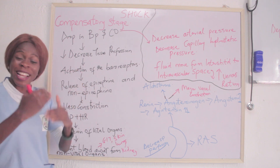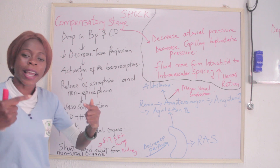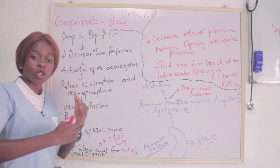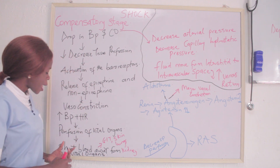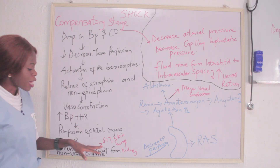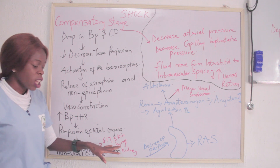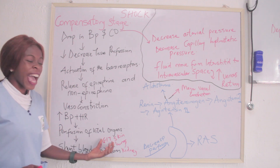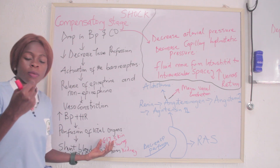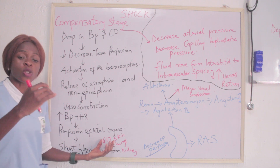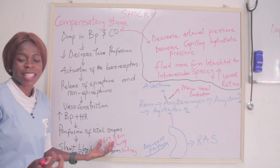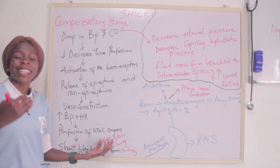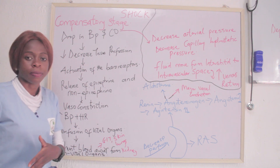While blood is being directed to vital organs, all those non-vital organs such as the gastrointestinal tract, the skin, the lungs, and the kidneys have been deprived. Because the GIT is not getting enough oxygen and fluid, it's going to lead to slower GIT activity and decreased peristaltic movement, and if care is not taken, it can lead to paralytic ileus. Also, because of the decreased supply to the skin, it's going to lead to cool, moist, pale skin.